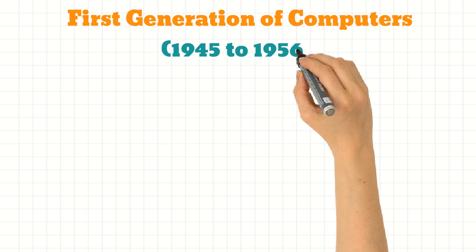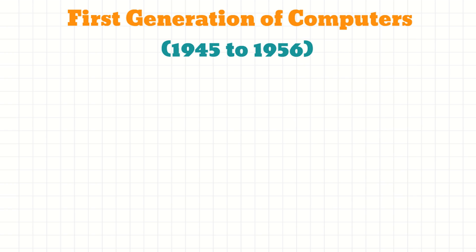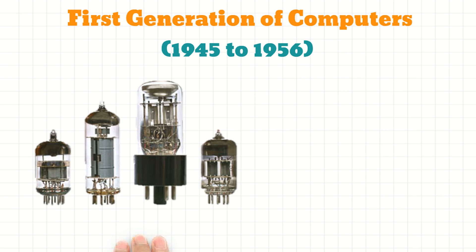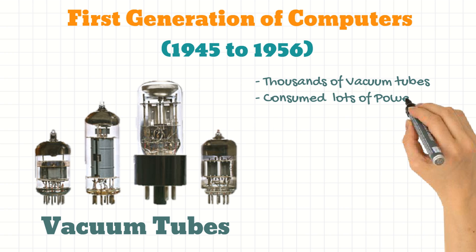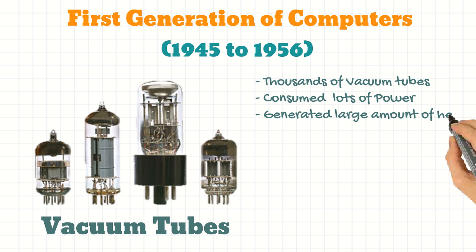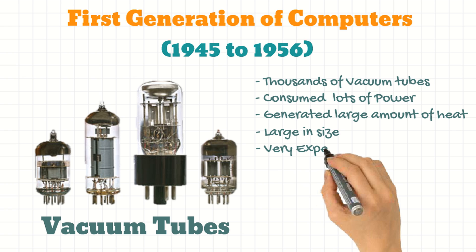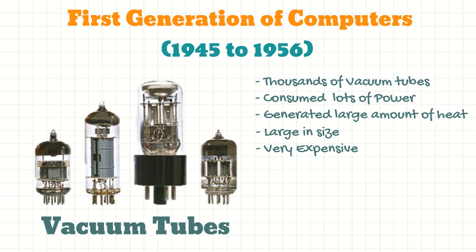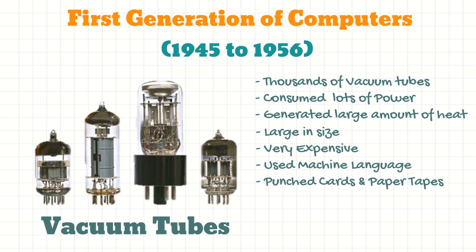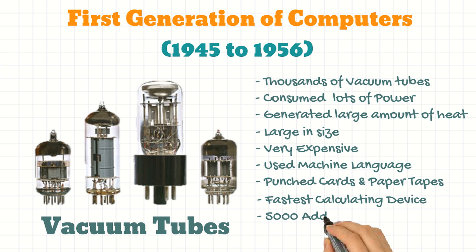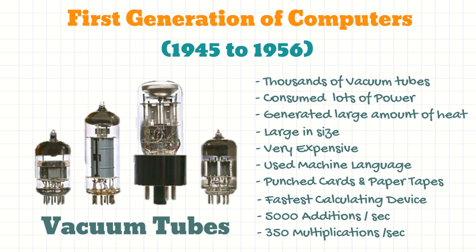Between 1945 to 1956, we had the first generation of computers which used thousands of vacuum tubes. As a result, they consumed a lot of power and generated a large amount of heat. They were large in size and very expensive too. Machine language was used to program them using punch cards and paper tapes. They were the fastest calculating device of their times and could do 5000 additions or 350 multiplications in one second.